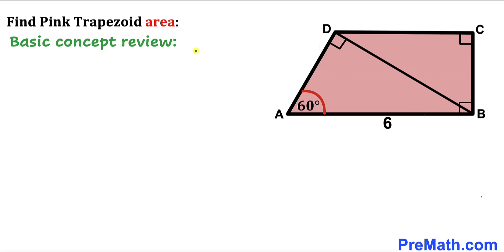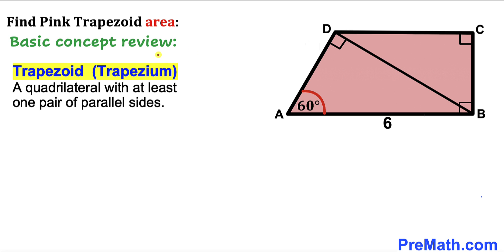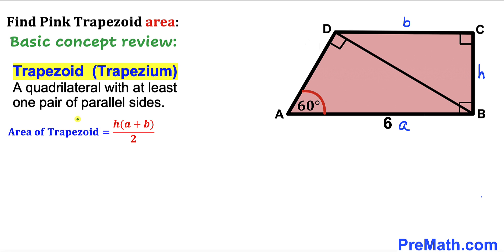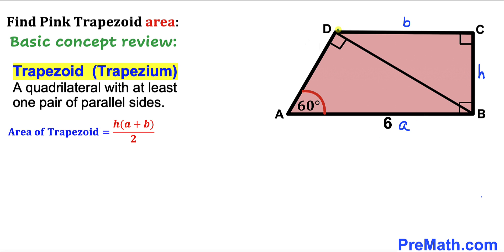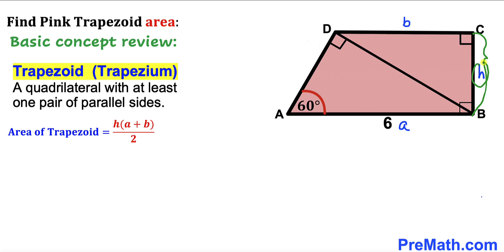Before we proceed, let me go over the basic concepts. Let's recall the definition of a trapezoid — sometimes we call it a trapezium. The area of a trapezoid formula is: Area = h × (a + b) / 2, where side AB is base a, side CD is base b, and side BC is height h. We need to figure out the value of base b and height h.